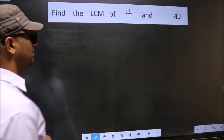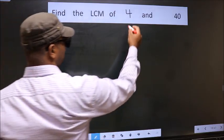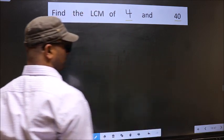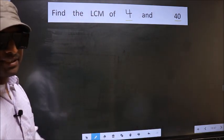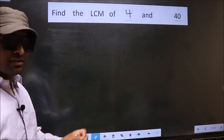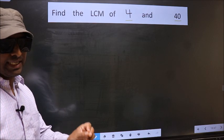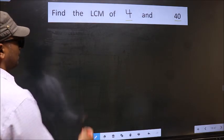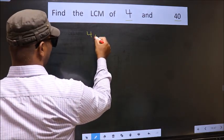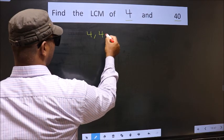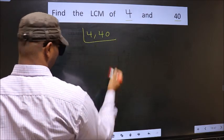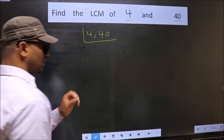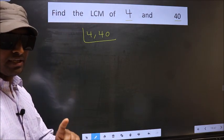Find the LCM of 4 and 40. To find the LCM, first we should frame it in this way: 4 and 40. This is step 1.